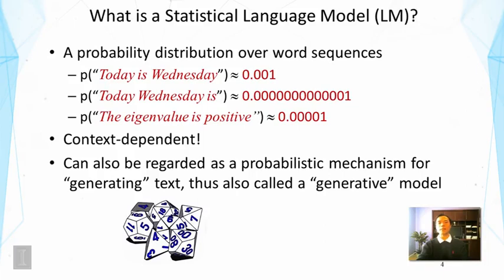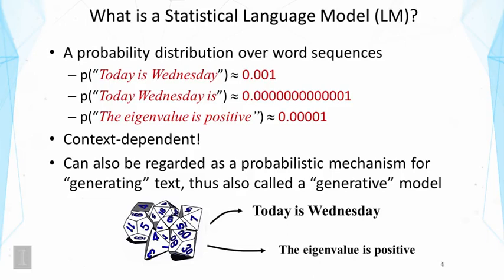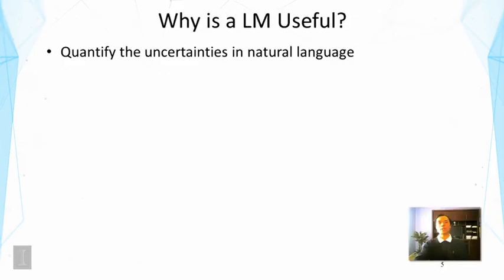We can imagine this as a stochastic system that generates sequences of words. We can ask the device to sample a sequence, and it might generate 'Today is Wednesday,' but it could have generated any other sequence — there are many possibilities. In this sense, we can view our data as a sample observed from such a generative model.